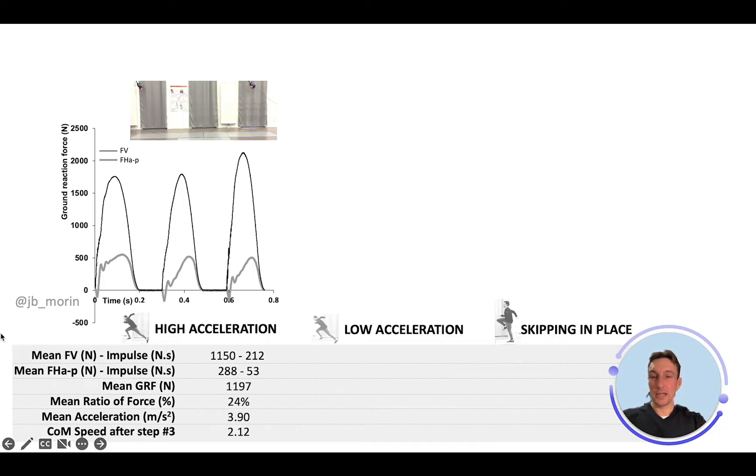In maximum acceleration, there's a high amount of vertical force, more than 1100 newtons, and a high amount of vertical impulse. The impulse is the force multiplied by the contact time, on average for the three steps.